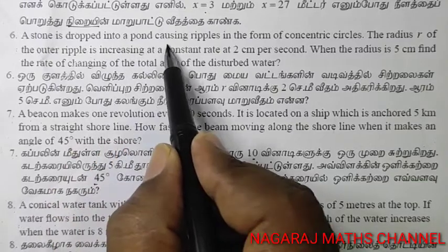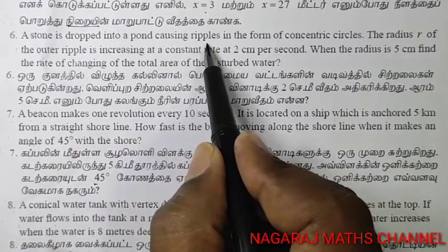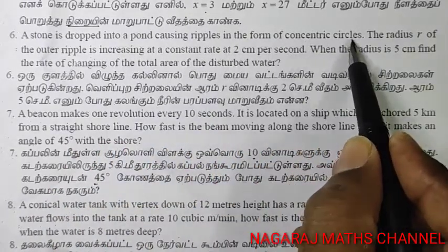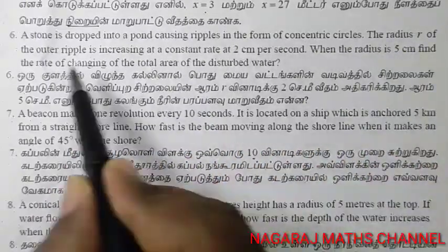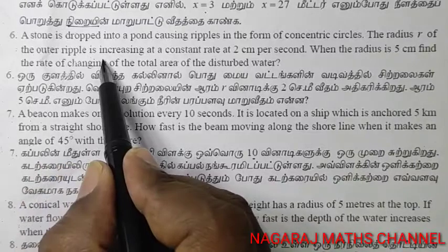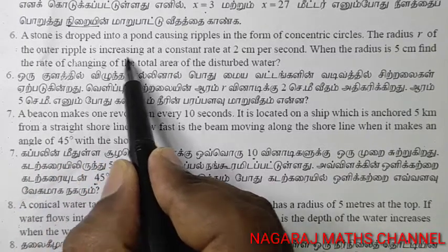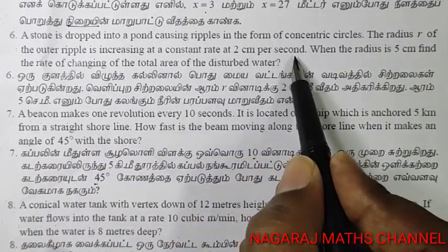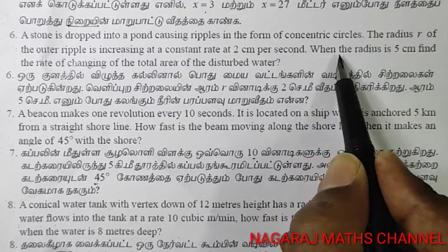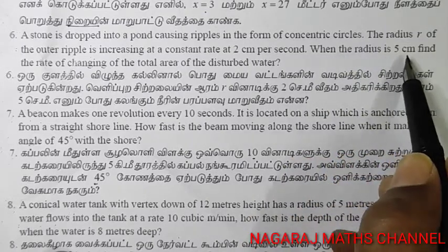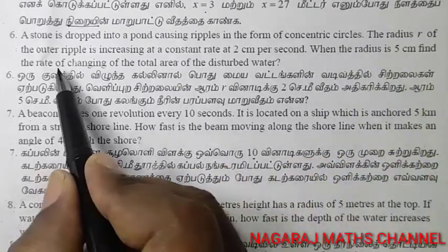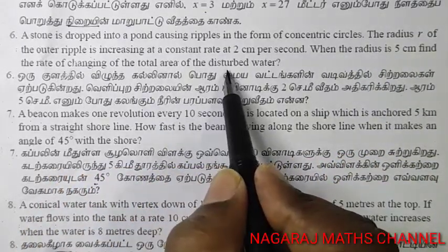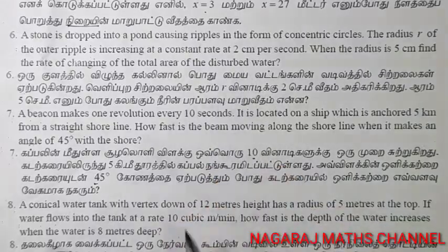A stone is dropped into a pond causing ripples in the form of concentric circles. The radius R of the outer ripple is increasing at a constant rate of 2 cm per second. When the radius is 5 cm, find the rate of change of the total area of the disturbed water.